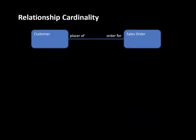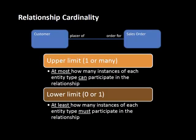Then we started talking about relationship cardinality, which is really talking about how many instances of each entity type can or must participate in a relationship. There can be an upper limit — how many of the other entity type can be connected to this entity type. At the most, how many — that's the upper limit.